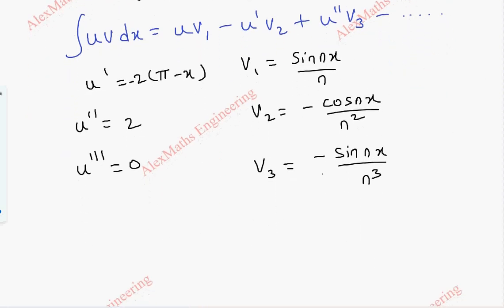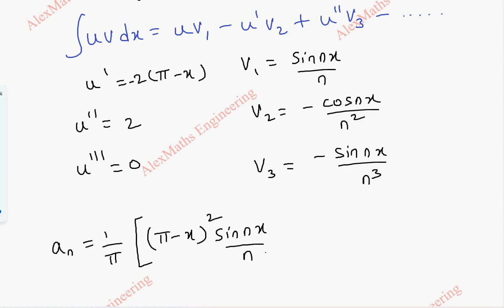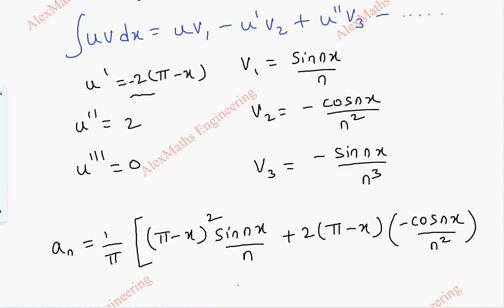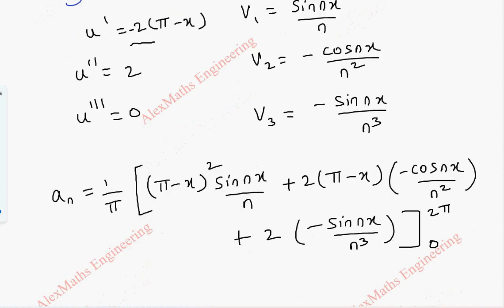Substituting into Bernoulli's formula, aₙ = (1/π) times [(π − x)² · (sin(nx)/n) + 2(π − x) · (−cos(nx)/n²) + 2 · (−sin(nx)/n³)], evaluated from 0 to 2π.